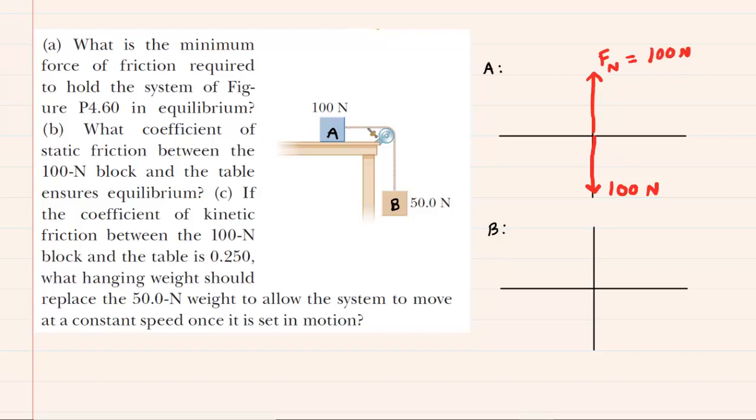And then we can see that it's attached to a rope, and that rope is going to pull the block to the right. And because it is a pulling force produced by a rope, we call that a tension force.